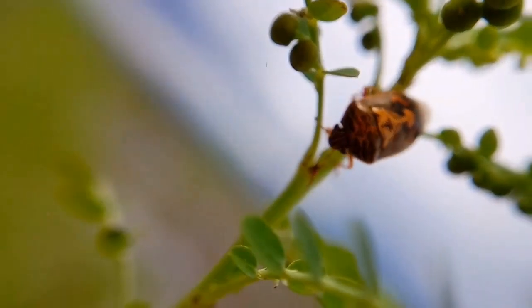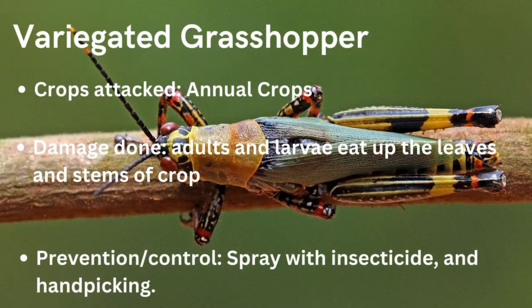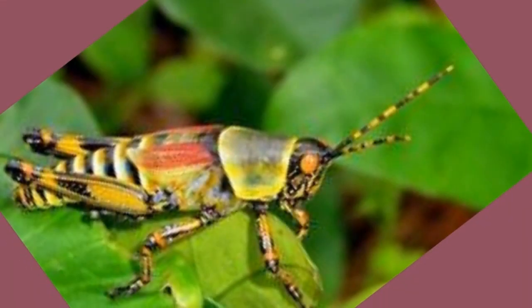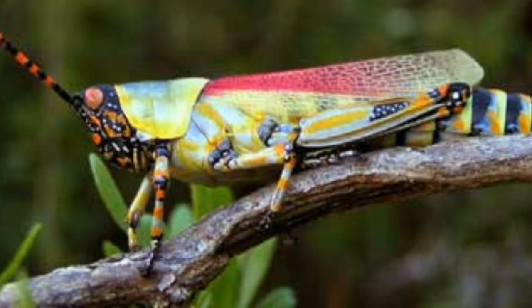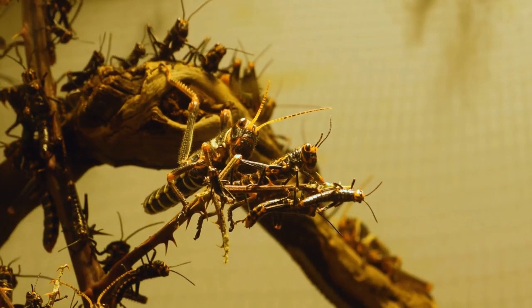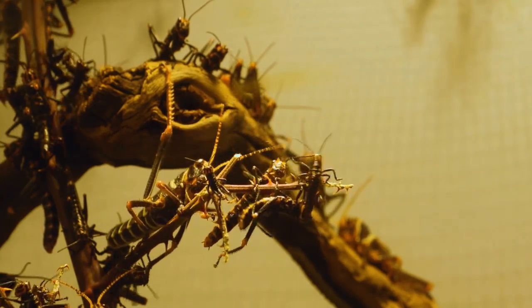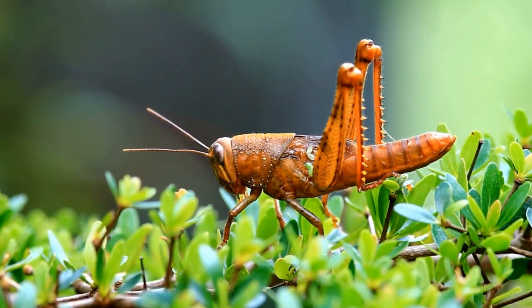The next pest is the variegated grasshopper, also known as Zonocerus variegatus. It normally affects most annual crops such as cassava, yam, maize, and rice. The nature of damage includes the adults and larvae eating up the leaves and stems, causing the rate of photosynthesis to reduce. A typical method of controlling the variegated grasshopper on the farm is by hand picking and spraying with insecticide such as Rodrex 40.